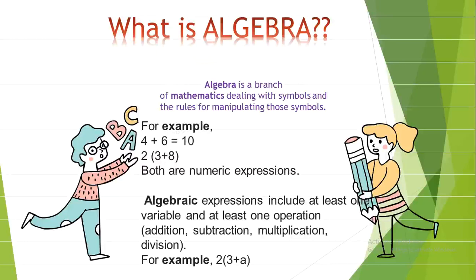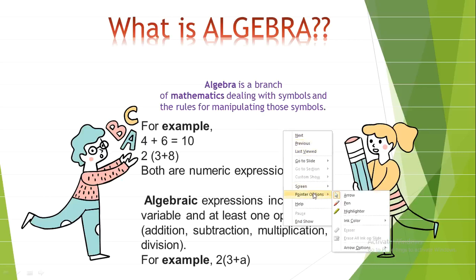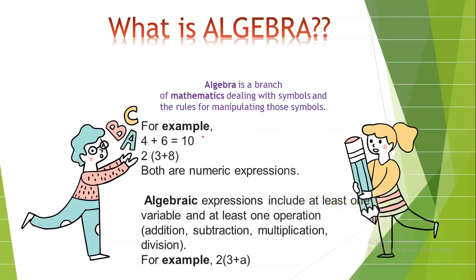For example, 4 plus 6 equals 10, or 2 times 3 plus 8. Both of them are numeric expressions. While algebra's expressions include at least one variable and at least one operation such as addition, subtraction, multiplication, and division.